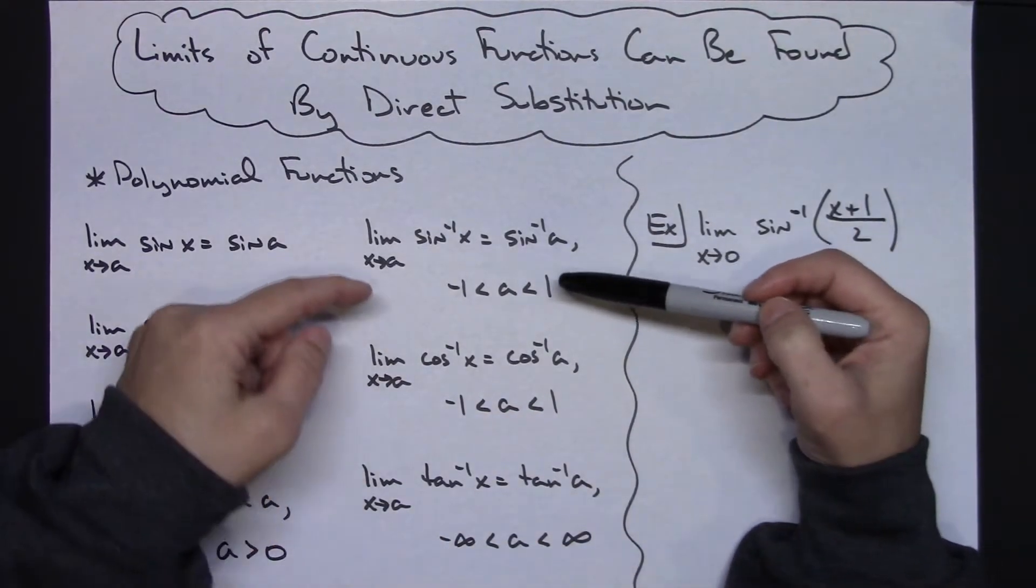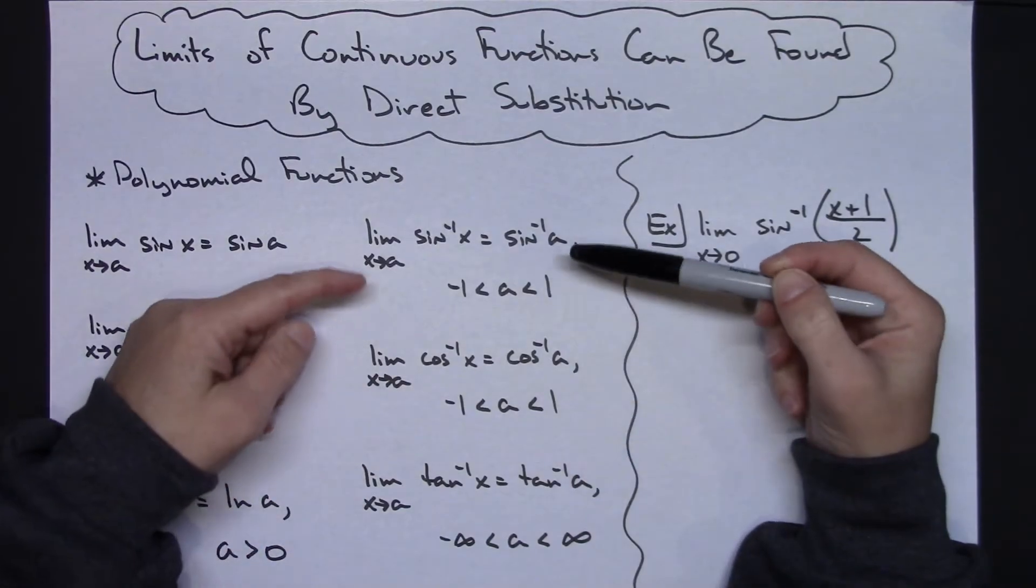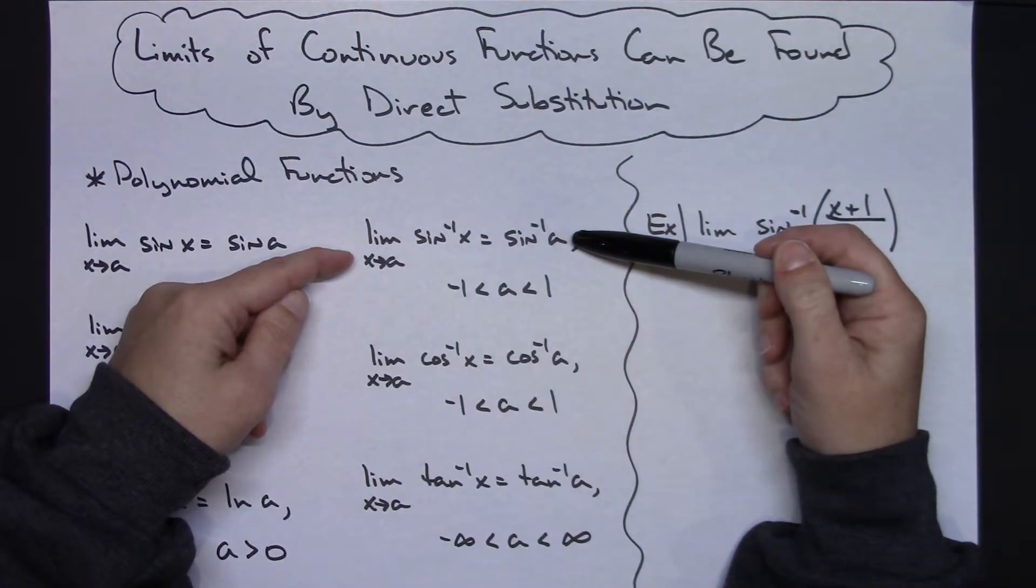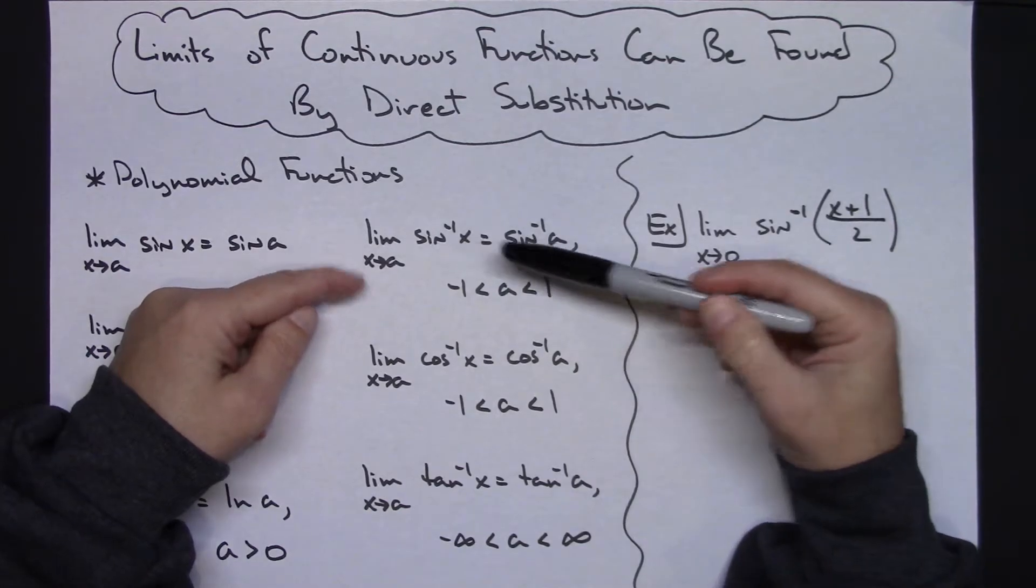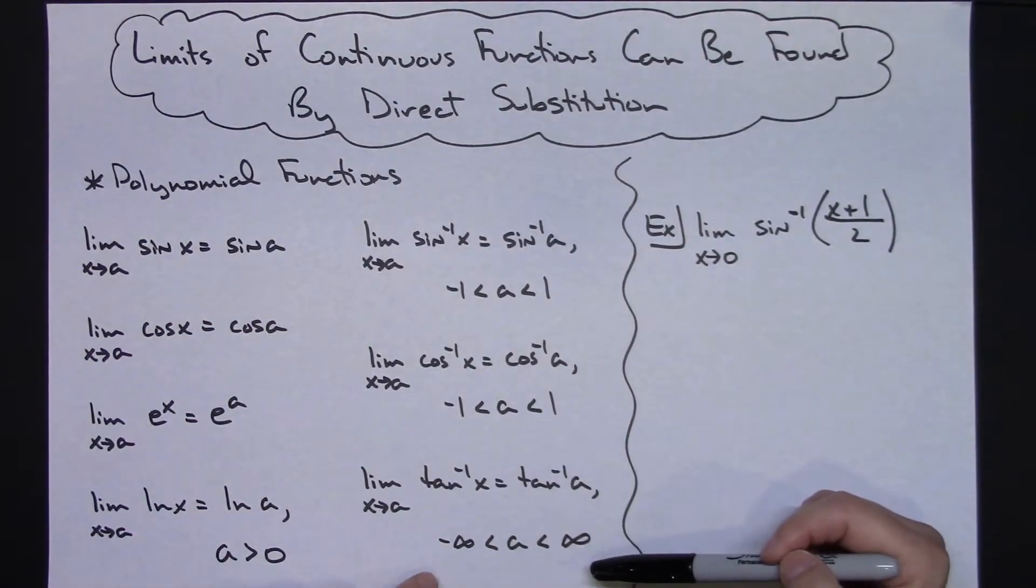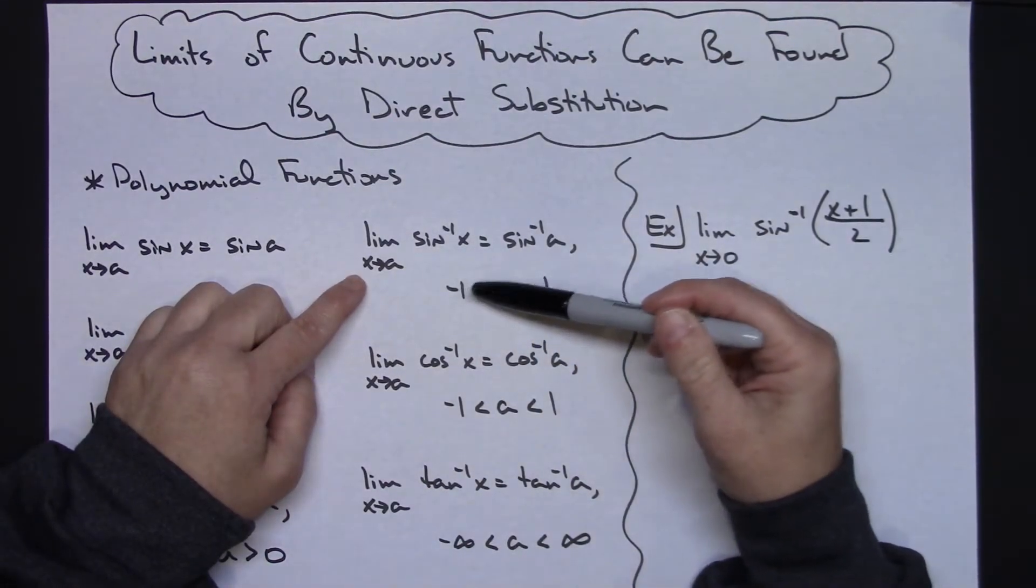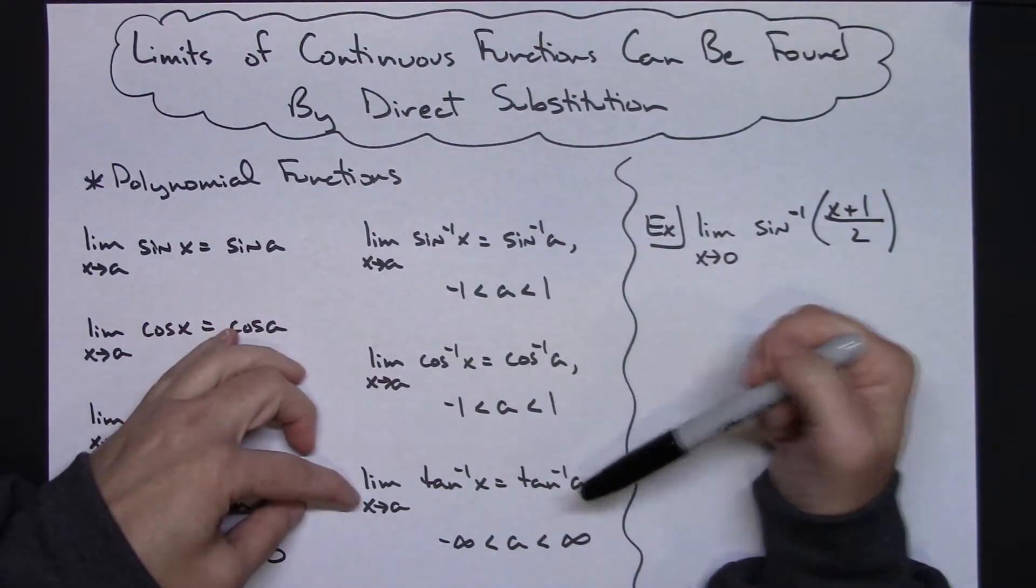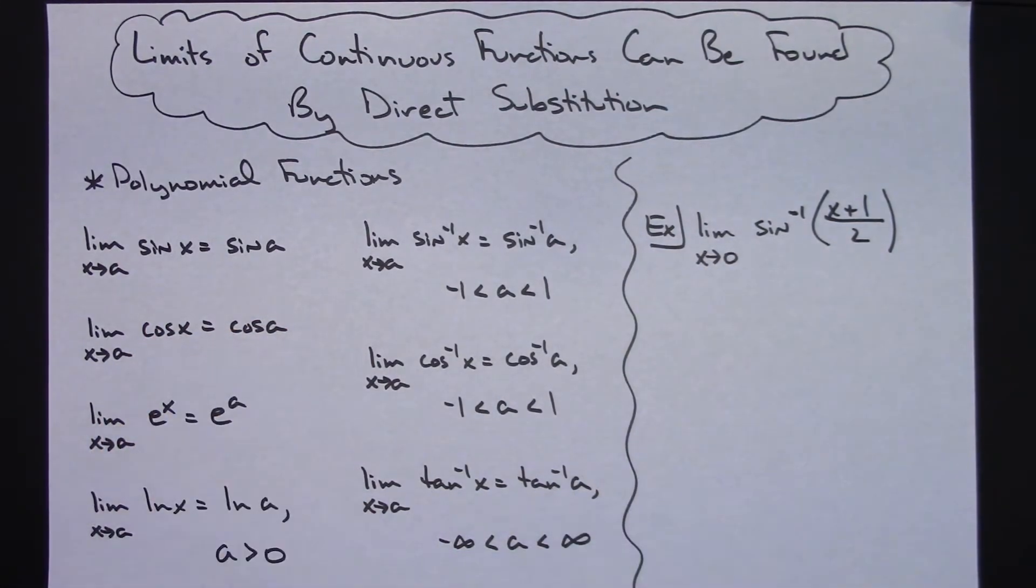You can also do this with your inverse trig functions. As long as there are conditions that are met, the inverse sine function is continuous between negative one and one. Same thing with cosine, and then tangent is continuous from negative infinity to infinity. So as long as you are approaching a value that's in that interval, you're going to be able to do a simple direct substitution on those as well.